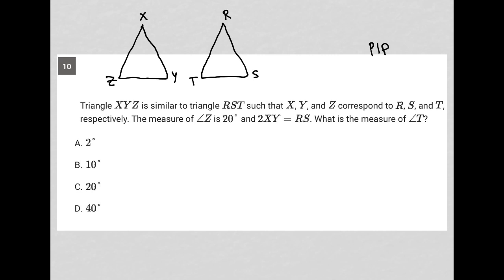The next sentence says the measure of angle Z is 20 degrees. And I know these are similar, so angle Z is 20 degrees. Because the triangles are similar, that means angle T must also be 20 degrees, because similar triangles have congruent corresponding angles.